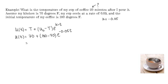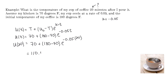We're evaluating the function when time is 20 minutes. So we compute 70 plus (180 minus 70) times E to the negative 0.05 times 20. When we plug that into a calculator, we get 110.47 degrees Fahrenheit. So after 20 minutes, the cup of coffee has cooled almost 70 degrees from its initial temperature of 180.